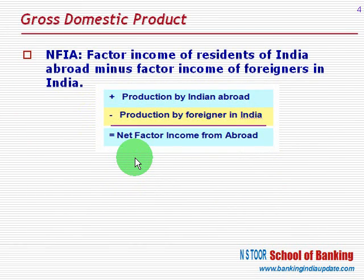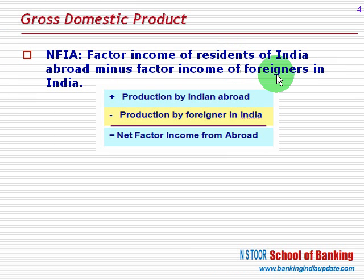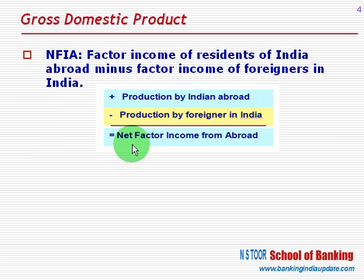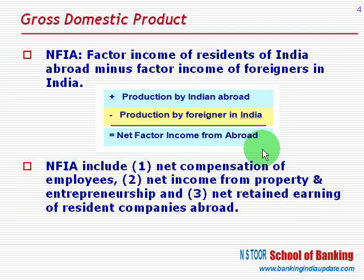Net factor income from abroad equals the factor income of residents of India abroad minus the factor income of foreigners in India — that is, production by Indians abroad minus production by foreigners in India. What we get is net factor income from abroad, and that is how NFIA is calculated.